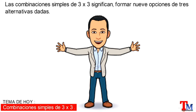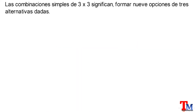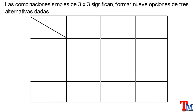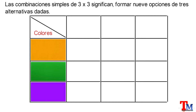A continuación, veamos un ejemplo utilizando una tabla de doble entrada, donde en la primera columna tenemos una variedad de colores, y en la primera fila tenemos una variedad de figuras.